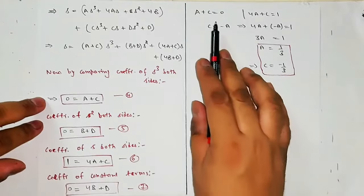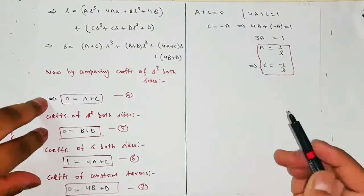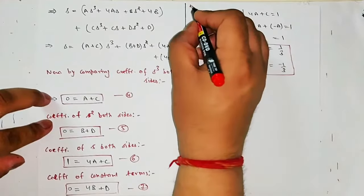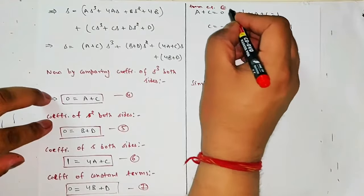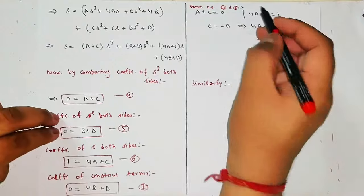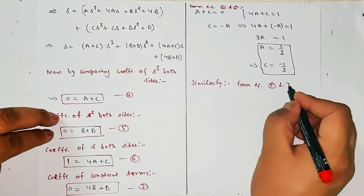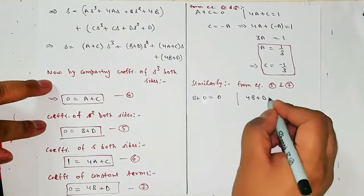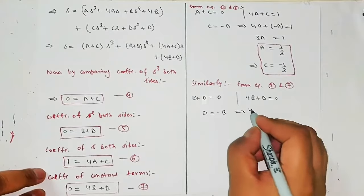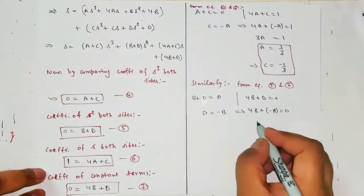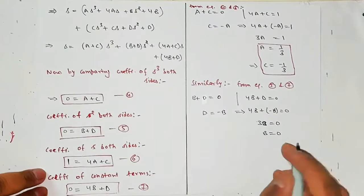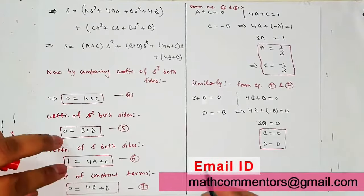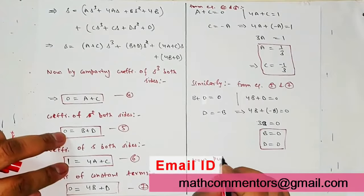From equations 5 and 7: B + D = 0 and 4B + D = 0. From the first, D = -B; substitute into the second: 4B - B = 0, so 3B = 0, giving B = 0 and D = 0. So all four constants are found: A = 1/3, B = 0, C = -1/3, D = 0.